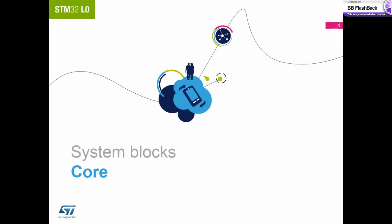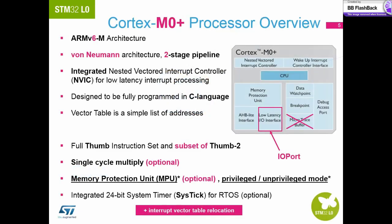Let's now look in detail at the system peripherals. The largest element of the system peripherals is the Cortex M0+ core itself. All the blocks within this element have been designed by ARM and are optional. At ST we have added all the optional blocks, with the exception of the microtrace buffer.